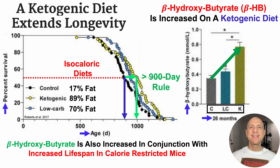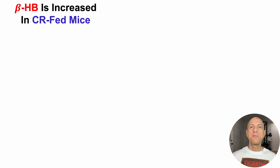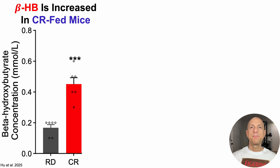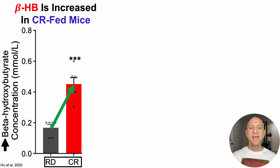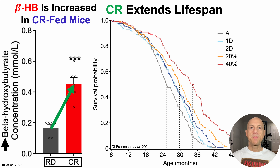This isn't the only lifespan-extending intervention associated with increased circulating levels of beta-hydroxybutyrate — that's also present in calorie-restricted mice. Starting with beta-hydroxybutyrate circulating levels on the y-axis, we've got two diets: RD for regular diet and CR for calorie-restricted mice. Just like ketogenic diet-fed mice, calorie-restricted mice had about a two-fold increase for circulating levels of beta-hydroxybutyrate. Note that these data aren't from the same study — the beta-hydroxybutyrate data is from a different study relative to the CR lifespan study shown here.